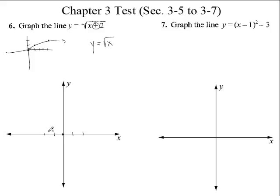Let's put a couple more points in here. It's going to be right here. If we go to the right one, you go up 1. If you go to the right 4, you go up 2. And if you go over 9, you go up 3. It kind of looks like a straight line, but it's not — you know it's a curve. It starts here, curves, and just keeps on going. It looks just like the parent function, except you just pushed it over two places to the left.